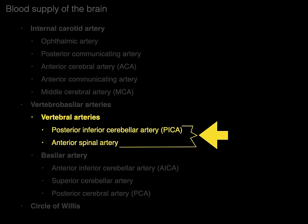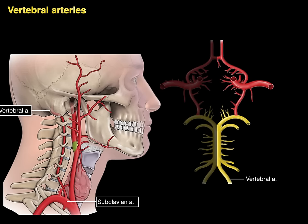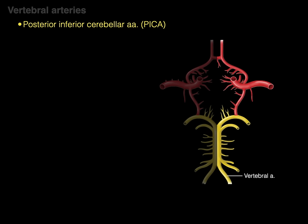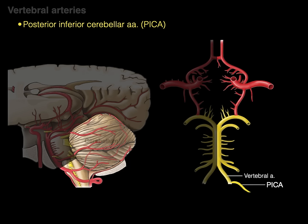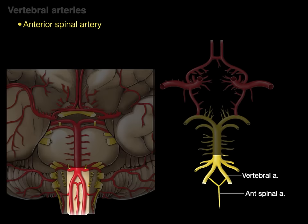Now let's look at the vertebral arteries and their branches. The vertebral artery is paired, one on either side. It arises from the subclavian artery, ascends through the transverse foramina of the cervical vertebrae, passes through the foramen magnum and into the skull. The two vertebral arteries fuse to become the basilar artery. A branch of the vertebral artery is the PICA — the posterior inferior cerebellar artery — which supplies the bottom back of the cerebellum. There is also the anterior spinal artery, formed from the two vertebral arteries, which courses in front of and supplies the front of the spinal cord.